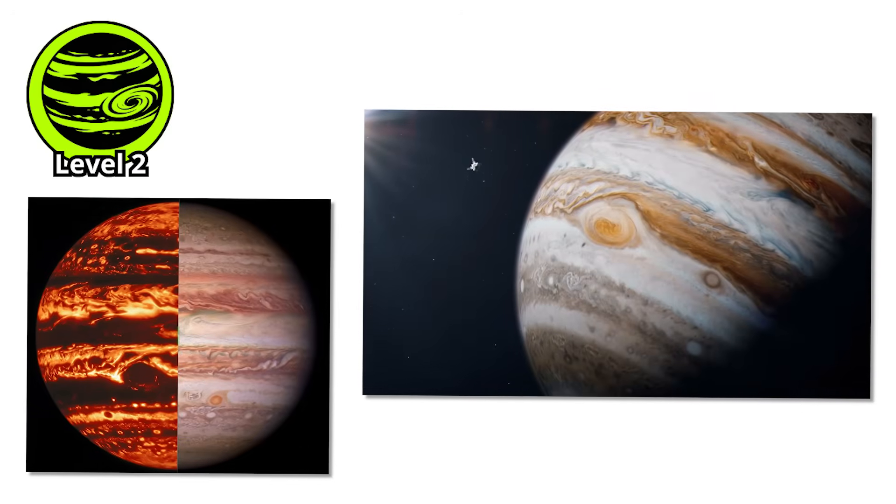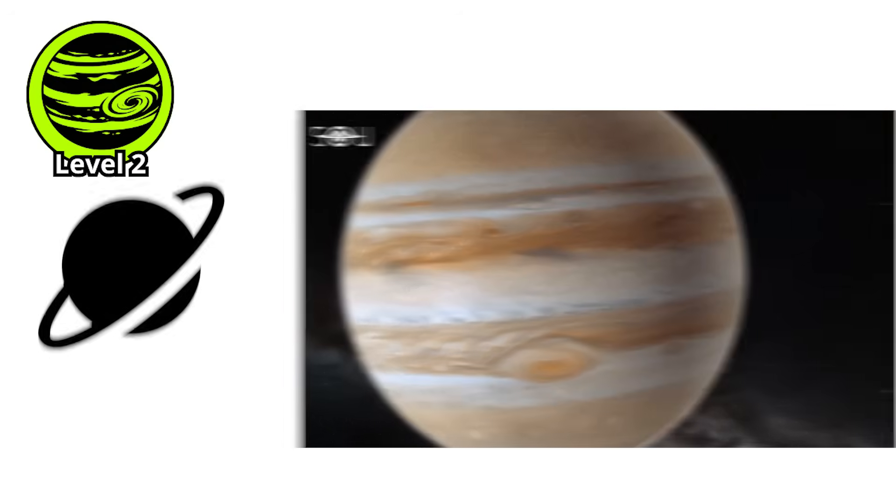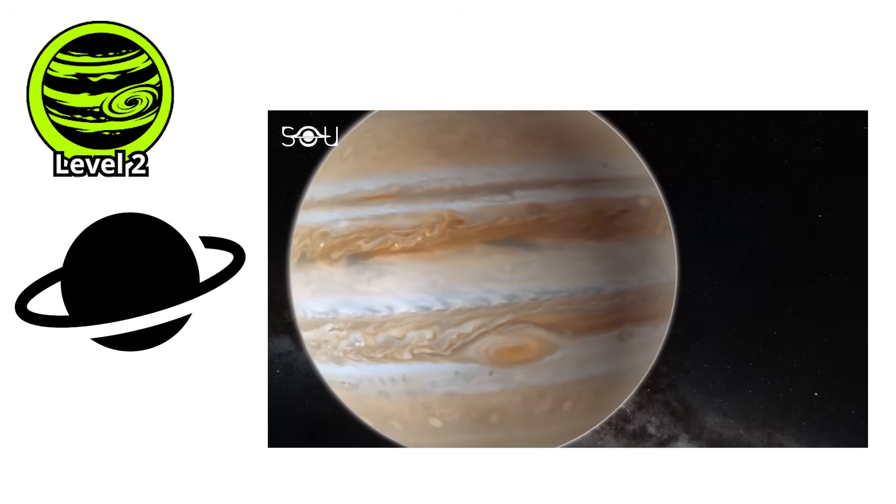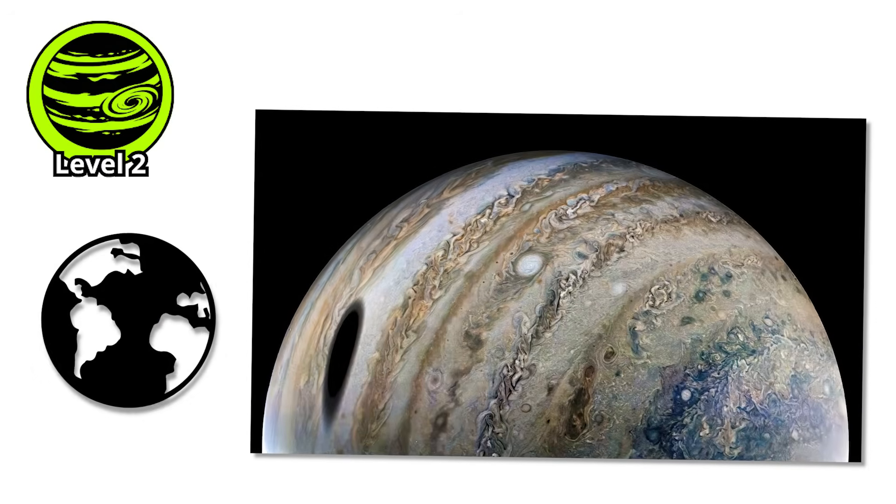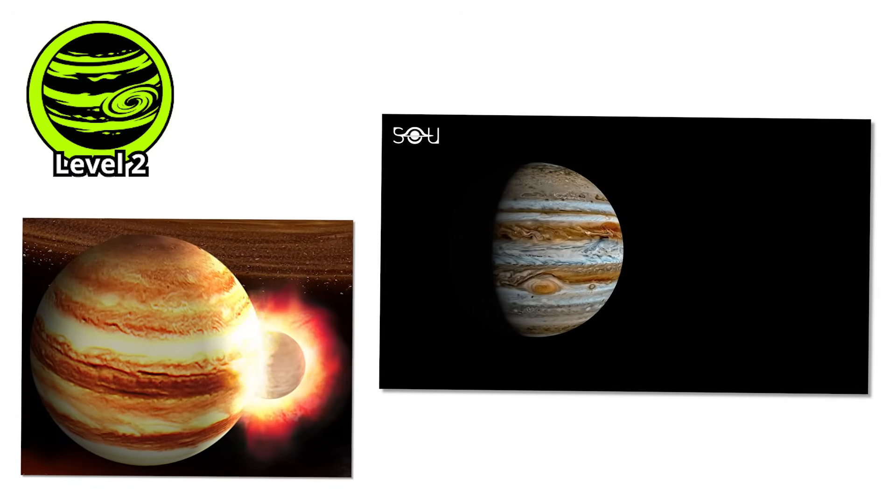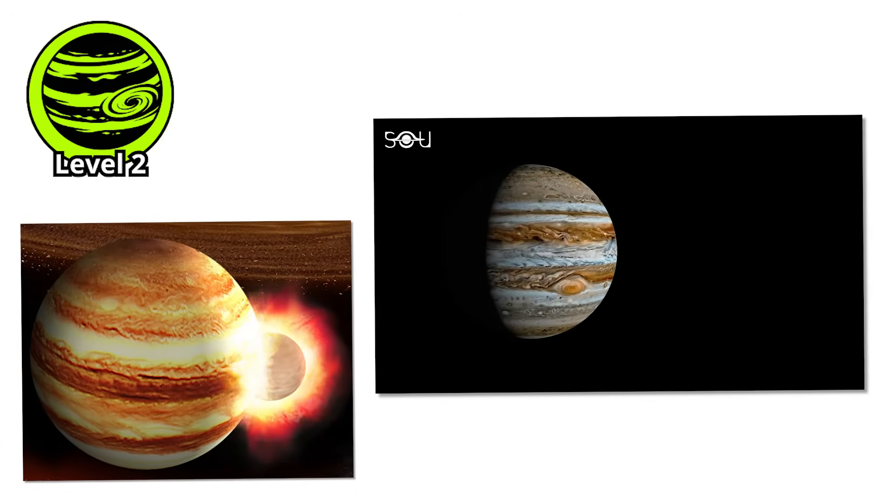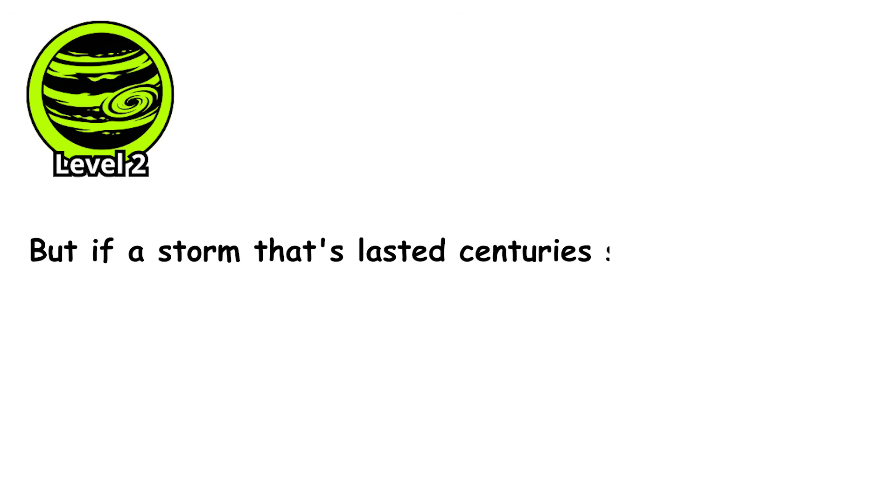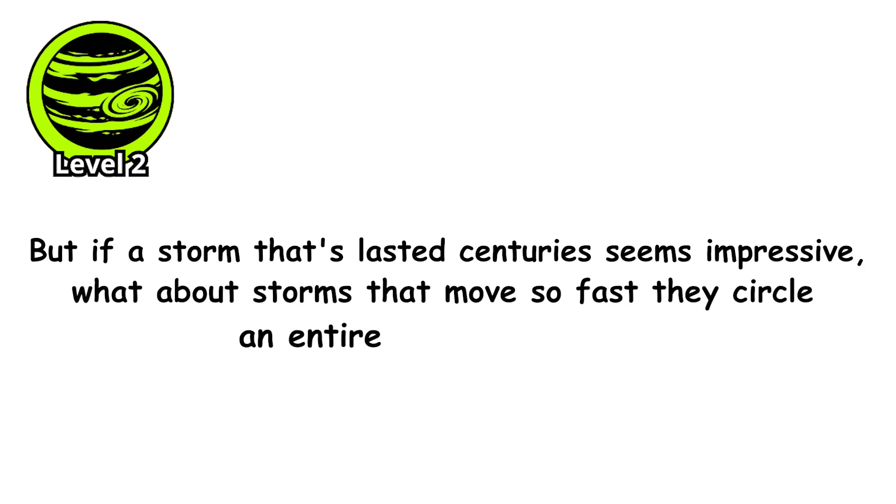Yet even as one storm fades, Jupiter's atmosphere spawns new ones constantly. The planet's surface is a roiling chaos of storms, dozens of them, some the size of Earth, colliding and merging and tearing each other apart in a dance that's been ongoing for billions of years. But if a storm that's lasted centuries seems impressive, what about storms that move so fast they circle an entire planet in hours?